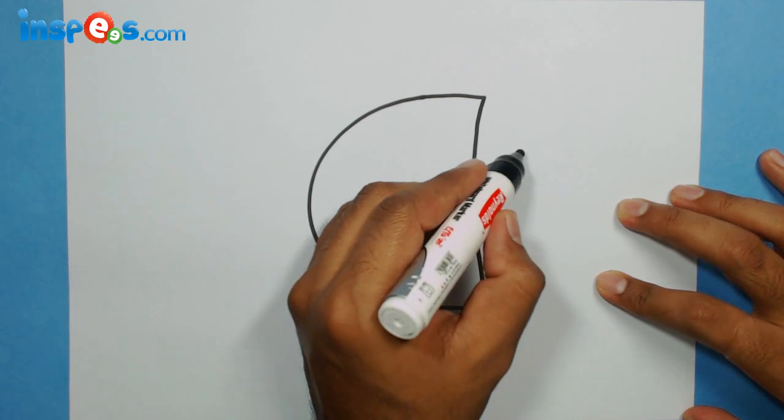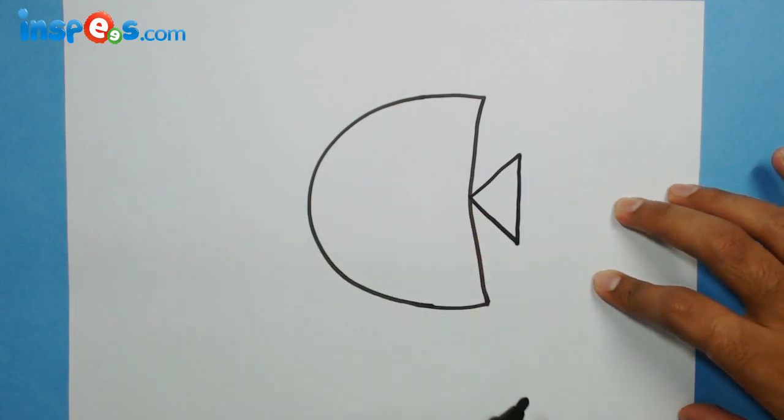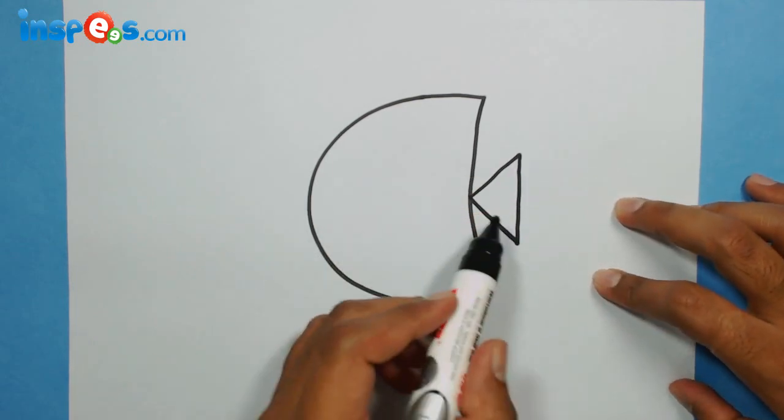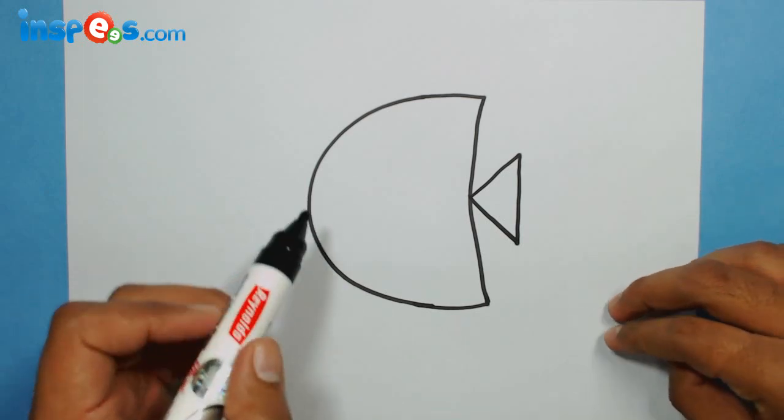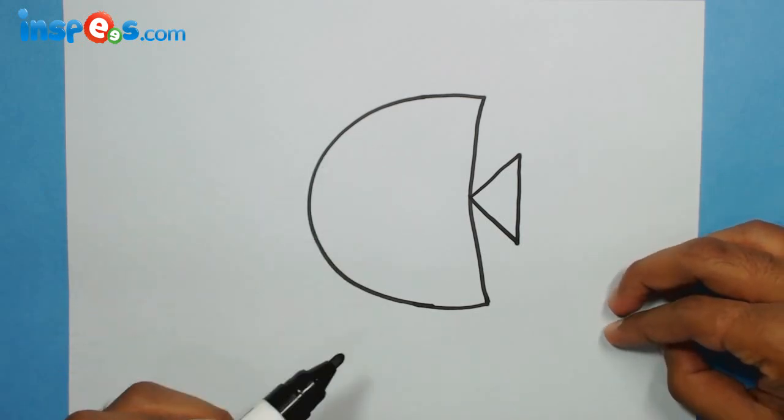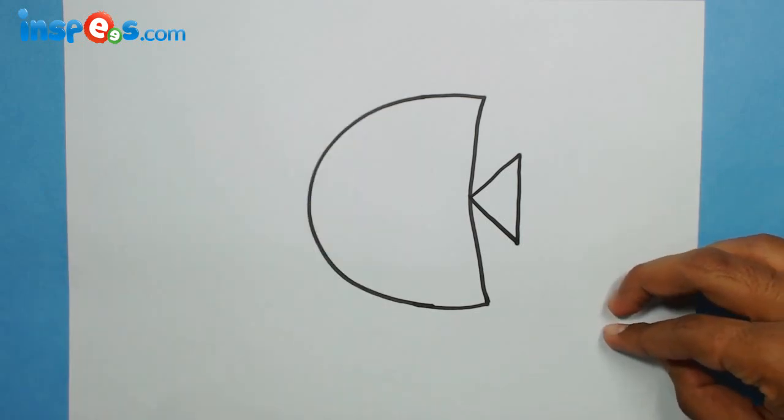Now the fish needs a mouth and an eye over here, and some features at the spot. So I'm going to make a mouth here, yeah like this.